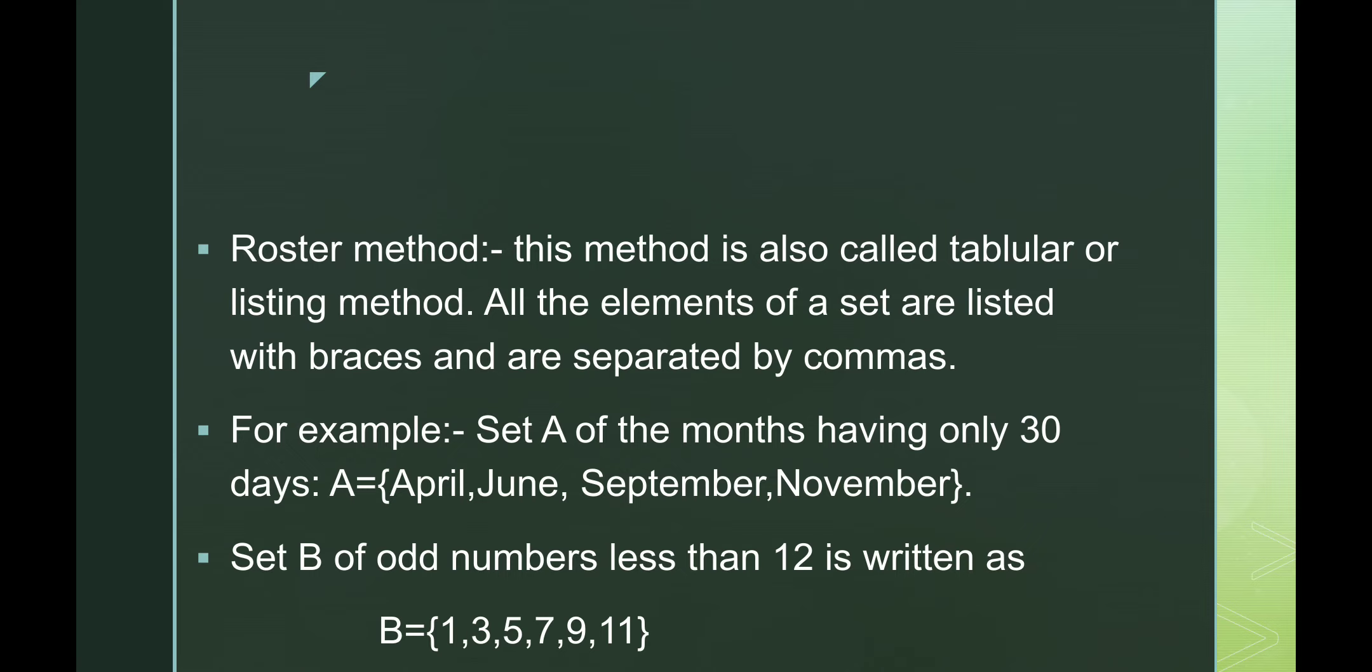These 4 months are elements of the set called set A. Set B contains odd numbers less than 12 and that can be written as a set within the bracket 1, 3, 5, 7, 9, 11. So, 1, 3, 5, 7, 9, 11 are called elements of set B or we can say members of set B.